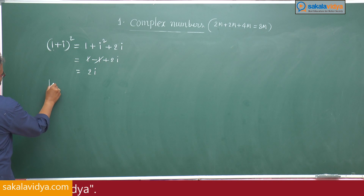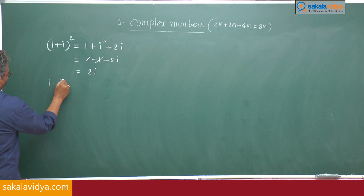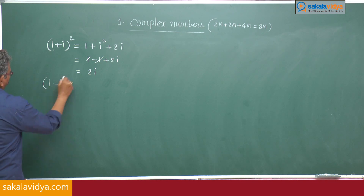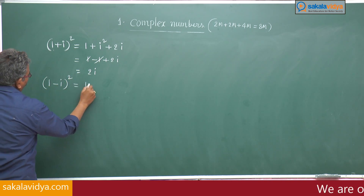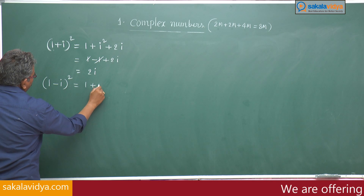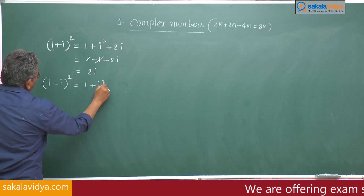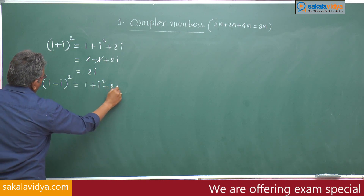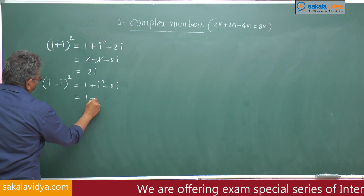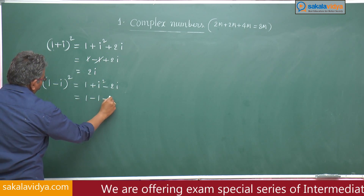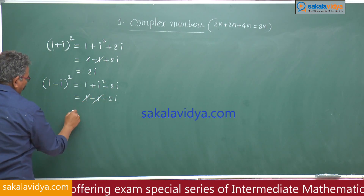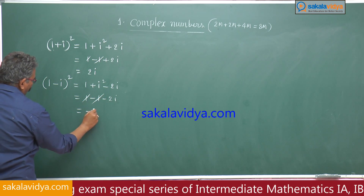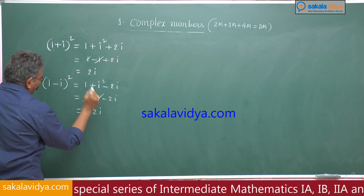What is (1-i)²? That is also 1 + i² minus 2i. So 1 minus 1 minus 2i — this gets cancelled, we have minus 2i.